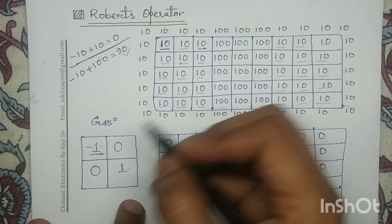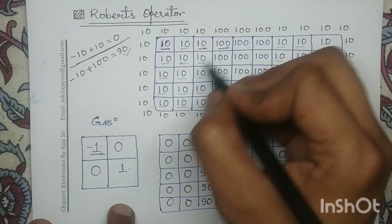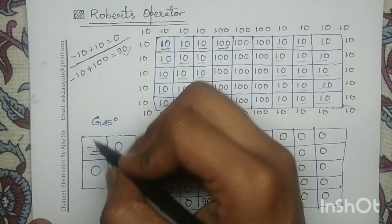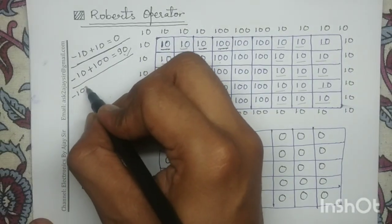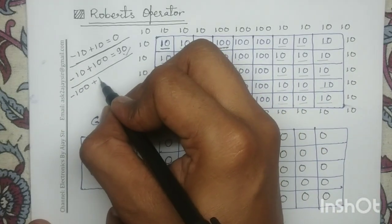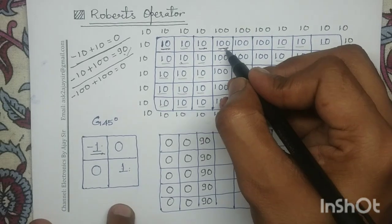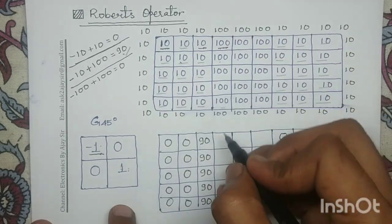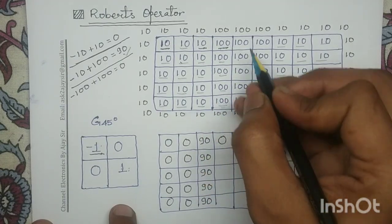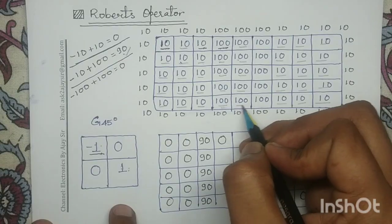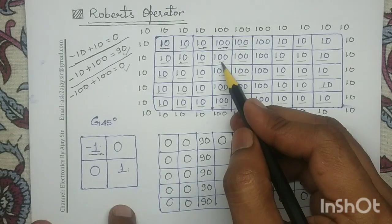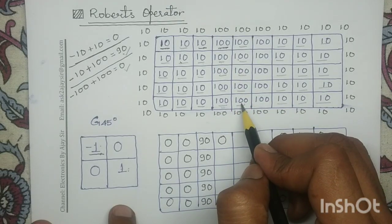Next, we apply the center of this mask at this point. This pixel value 100 will be multiplied with coefficient minus 1, giving minus 100, and this pixel value 100 will be multiplied with coefficient 1. So minus 100 plus 100 equals 0. In the similar manner, if you determine the response for these four pixels as well as these five pixels, you get the same response: minus 100 plus 100, equal to 0.